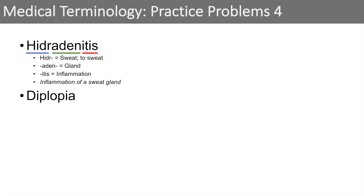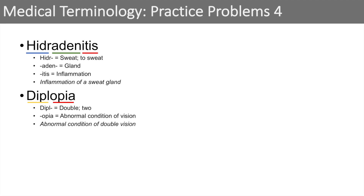The next word is diplopia. If we break it down, we look at the first portion: dipl — you can think of double or two. And opia — the op portion has something to do with the eyes or vision, and the ia means an abnormal condition. So opia means an abnormal condition of vision. When we put it together, diplopia means an abnormal condition of double vision.